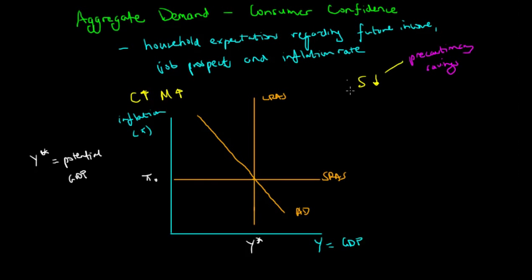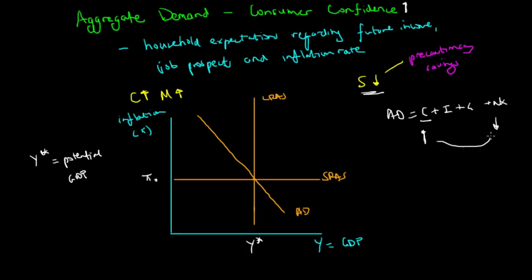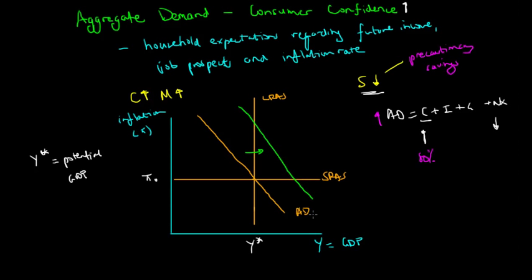If consumer confidence increases, savings go down. Aggregate demand equals consumption C, plus investment I, plus government spending G, plus net exports. Because consumption goes up due to increased consumer confidence, and imports go up so net exports decrease, but since consumption makes up around 80% of aggregate demand, aggregate demand will most likely increase. This is reflected by a rightward shift of the aggregate demand curve, from AD0 to AD1.